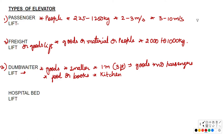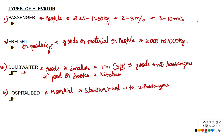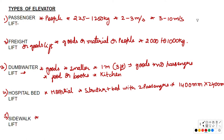Next is the hospital bed lift, designed mainly for hospitals to carry a stretcher or bed with two passengers. The minimum size of this lift is 1,400 mm to 2,400 mm.